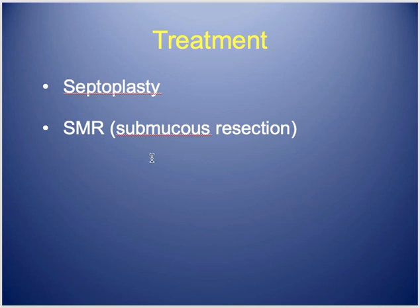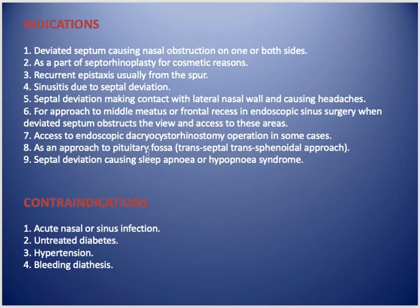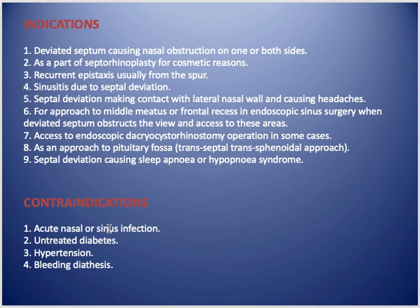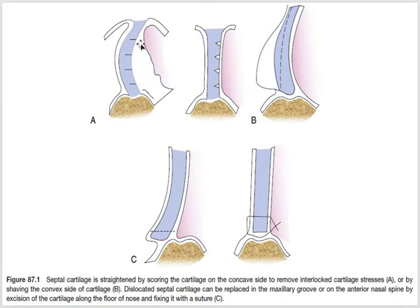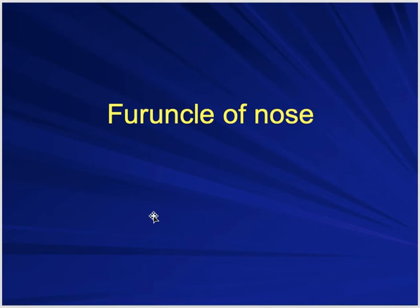The treatment for DNS is septoplasty or submucous resection (SMR). Indications include cosmetic reasons, recurrent epistaxis, sinusitis due to septal deviation, and significant symptoms like headache. Contraindications include active infection, untreated diabetes, and hypertension — similar to general surgical contraindications. The surgery involves making small cuts, removing or straightening parts of the cartilage, and fixing it with sutures.